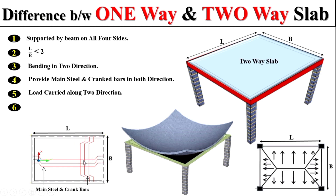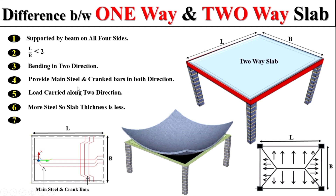Due to designing the main reinforcement in both directions, more steel quantity is required in the two-way slab. That's why the total slab thickness will be taken as less. Also remember, the deflected shape of a two-way slab caused by bending is called a dish-type shape.